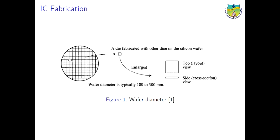The square part visible in the wafer is a chip. There are hundreds and thousands of chips formed from this circular wafer. The top view and the side view of a chip are shown. The thickness of this chip is usually less than 1 mm, and the diameter of the wafer is typically from 100 mm to 300 mm. Larger wafer size means more ICs or dies can be fabricated.